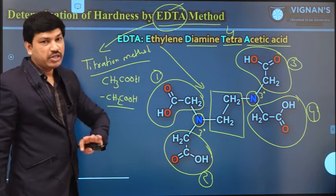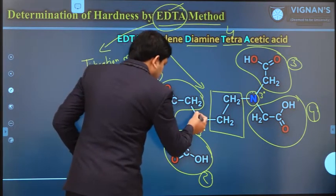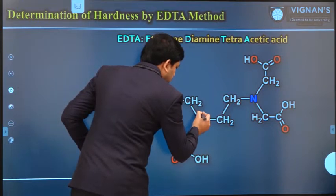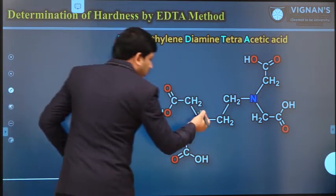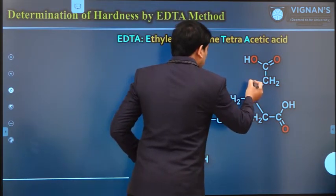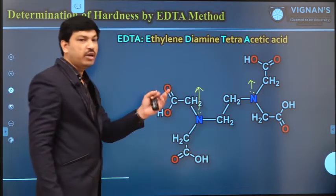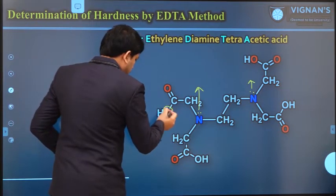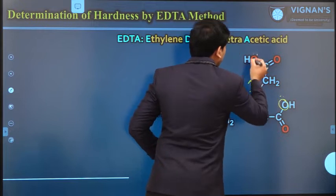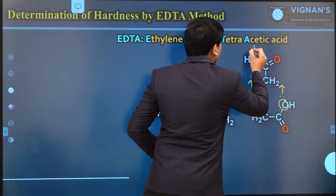So this reagent — why are we choosing this particular reagent? There is a reason. If you see the nitrogen atoms, each nitrogen actually has two lone pair of electrons. Due to the presence of these lone pairs, each nitrogen center is ready to donate these electrons to any metal center. At the same time, even the oxygen atoms also have lone pair of electrons — each oxygen group is also ready to donate its pair of electrons to any metal center.